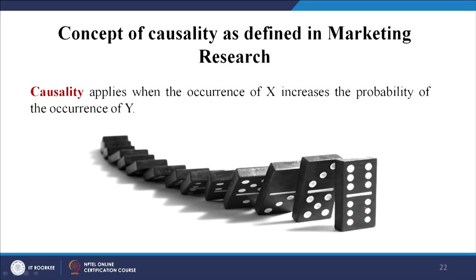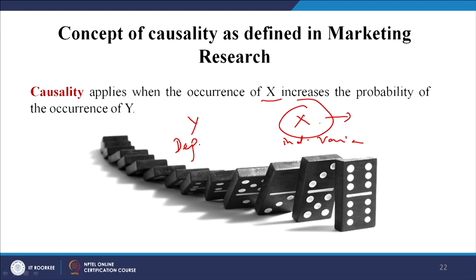The concept of causality in marketing research: causality applies when the occurrence of X increases the probability of the occurrence of Y, where Y is the dependent variable and X is the independent variable. The presence of X changes the presence of Y. For example, the most classical case is advertisement and sales — the occurrence of sales is affected by the presence of advertisement, and advertisements in different conditions have different effects on sales.